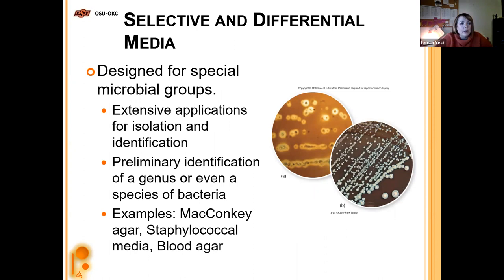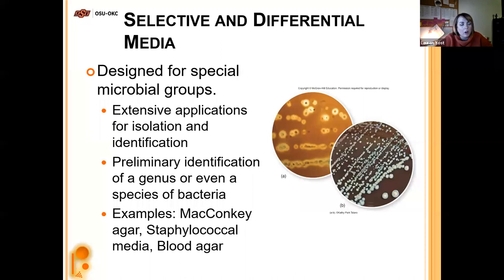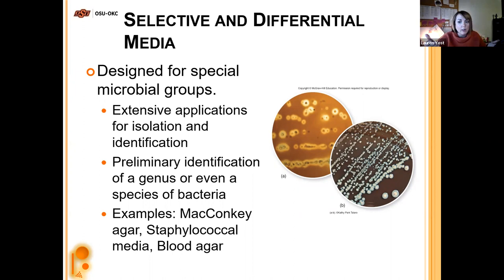Selective versus differential — these are two different kinds of media. Selective media allows only certain organisms to grow while inhibiting others. Differential media lets everything grow but shows differences in how organisms react to the medium. Both have extensive applications in isolation and identification and are used for preliminary identification. Examples include MacConkey agar, staphylococcal media, and blood agar.